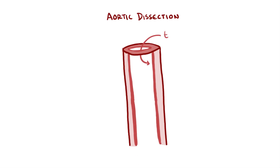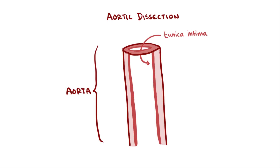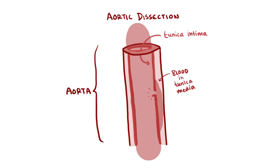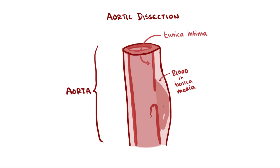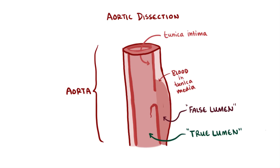An aortic dissection is where part of the tunica intima, which is the endothelial or innermost layer of the blood vessel of the aorta, is ripped off. A tear in the tunica intima of the aorta forms, and high-pressured blood flowing through the aorta begins to tunnel between the tunica intima and the tunica media, separating the two layers. Blood pools between the two layers, increasing the outside diameter of the blood vessel. The area where blood collects between the tunica intima and the media is called a false lumen, and the true lumen is the regular lumen of the blood vessel.